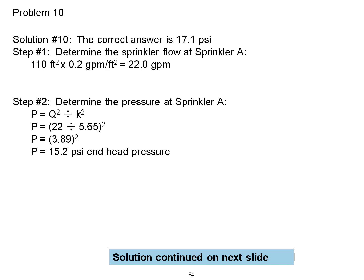The solution to problem 10 is 17.1 PSI. Step 1, determine the sprinkler flow at sprinkler A: 110 square feet times 0.2 gallons per minute per square foot equals 22 GPM.